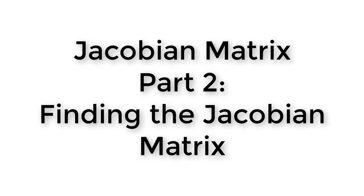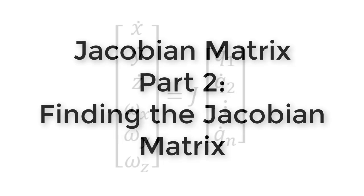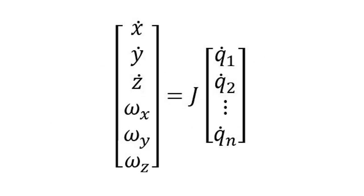In the last video, we learned that the Jacobian matrix defines the relationship between joint velocities and end effector velocities. We know that each Q is a joint variable, so the J matrix needs to have a number of columns equal to the number of joints in the manipulator. And since there are six things in the vector on the left, the J matrix needs to have exactly six rows, always.